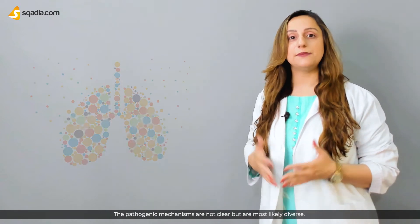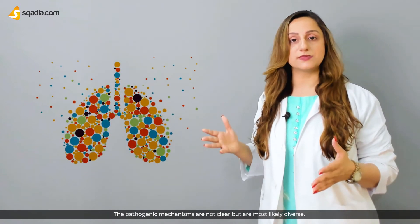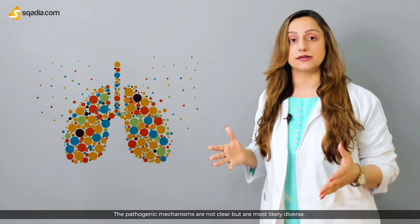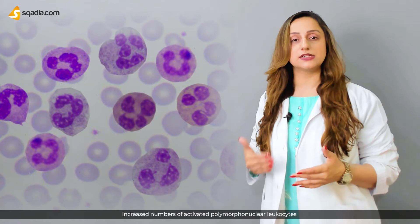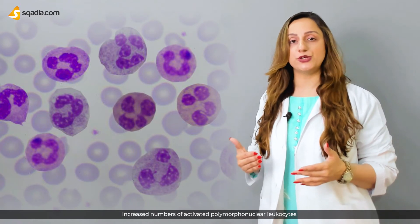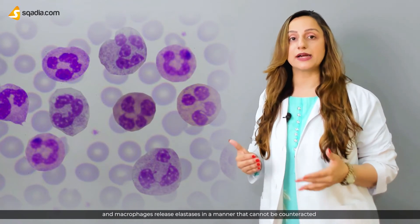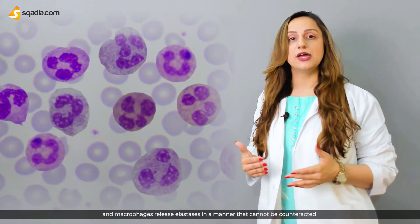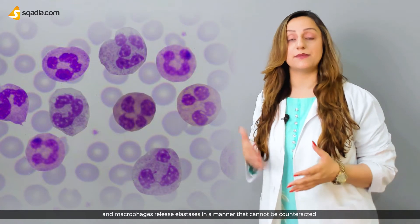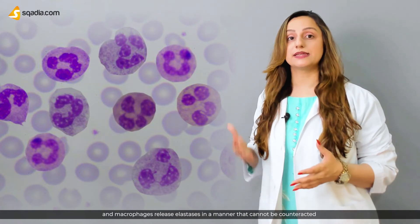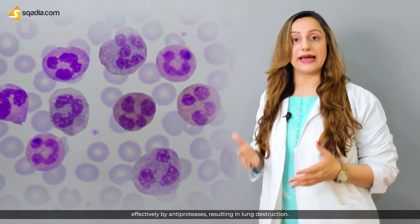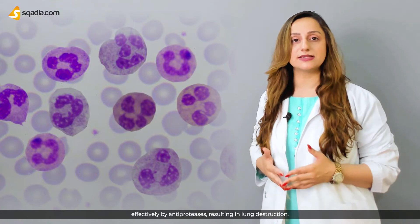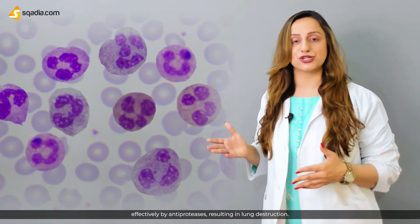The pathogenic mechanisms are not clear but are most likely diverse. Increased numbers of activated polymorphonuclear leukocytes and macrophages release elastases in a manner that cannot be counteracted effectively by anti-proteases, resulting in lung destruction.